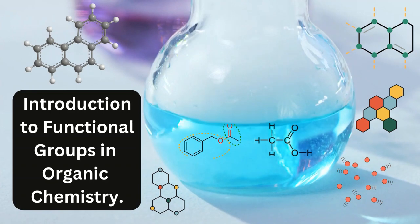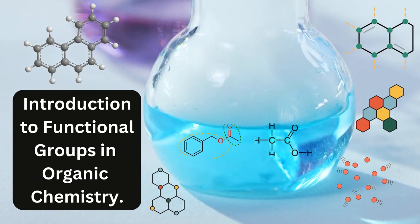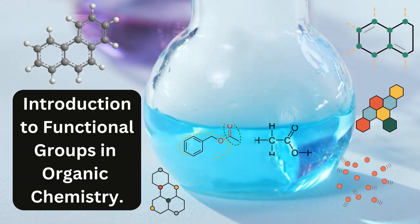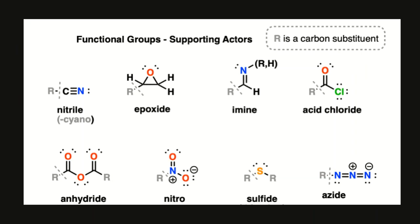Examples of functional groups include: hydroxyl, alcohol, aldehyde, ketone, carboxylic acid, amine, ether, halogens, and double and triple covalent bonds.